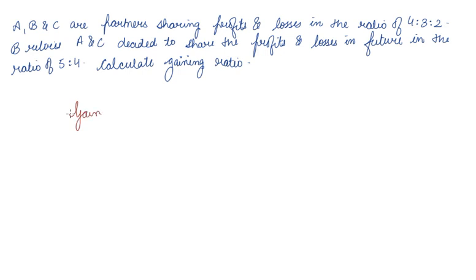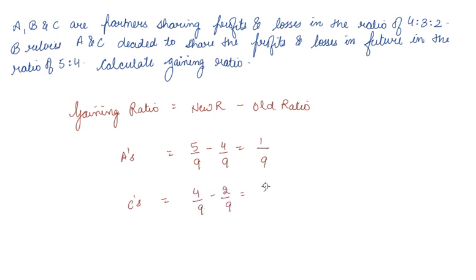The formula of gaining ratio we studied was new ratio minus old ratio. B retires, so we have to find out A's gaining ratio and C's gaining ratio. A's new ratio is 5/9, old ratio was 4/9, so 1/9 is the gaining ratio of A. C's gaining ratio: new ratio is 4/9, old ratio was 2/9, so 2/9. The gaining ratio between A and C is 1:2.